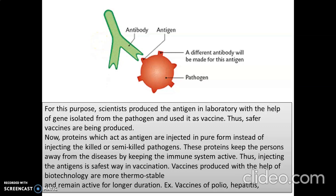Proteins which act as antigens are injected in pure form instead of injecting the killed or semi-killed pathogen. These proteins keep the person away from the disease by keeping the immune system active. Thus, injecting the antigen is the safest way in vaccination. Vaccines produced with the help of biotechnology are more thermostable — temperature does not affect them much and they remain active for a longer duration. Examples include vaccines of polio, hepatitis, and the anticipated vaccine for coronavirus.